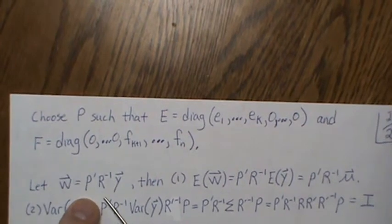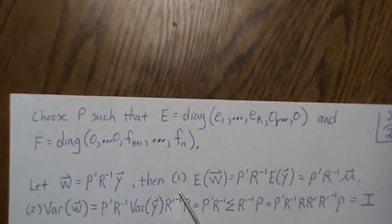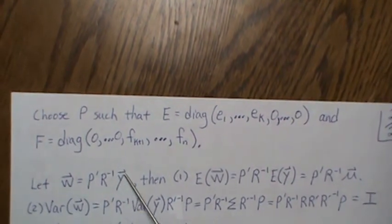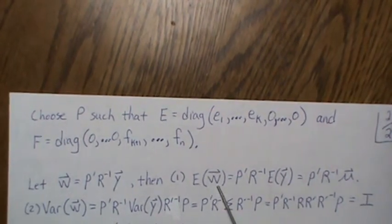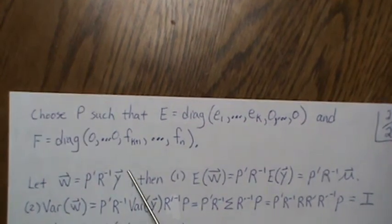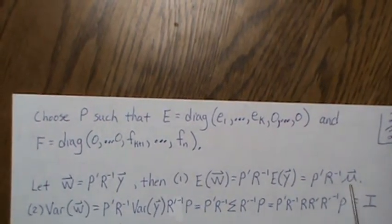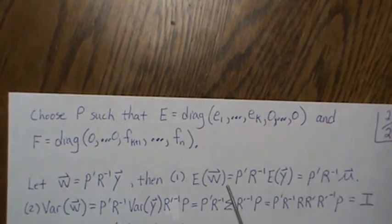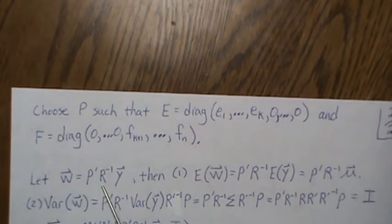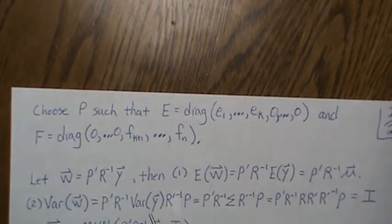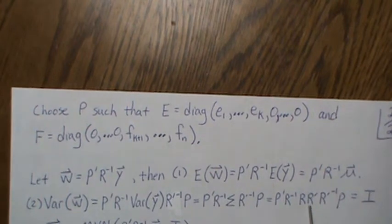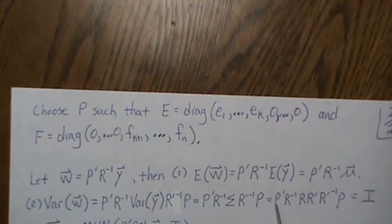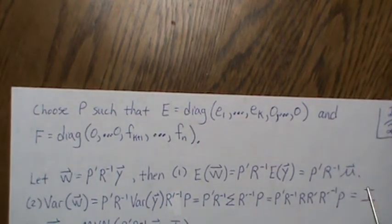So let's let W equal P' R^(-1) Y. Then, now notice that Y is a normal random variable. So then the expected value of the vector W is, we take it in and the only random piece is Y. So we take it in and its expectation is μ. So this is the mean of W. Now the variance of W, we bring out these matrices out front and then we transpose them out back, and then the variance of Y. The variance of Y was Σ, but Σ is R R', and then this times that, we get the identity. R' R'^(-1) is the identity. P' P is the identity. So this is the identity.